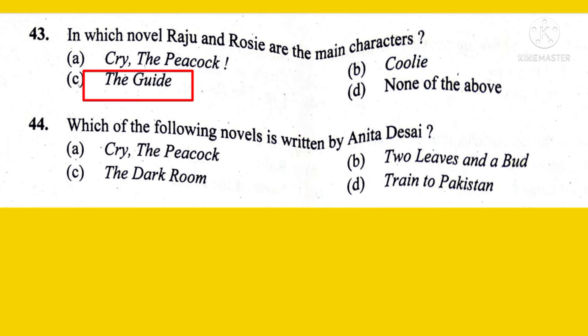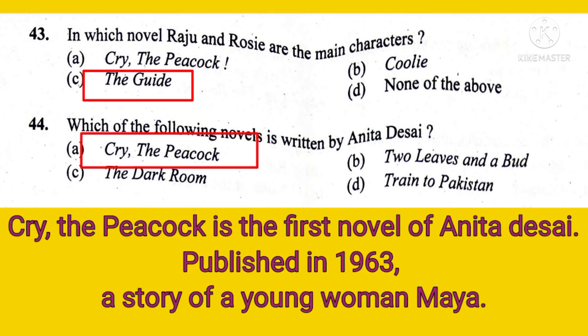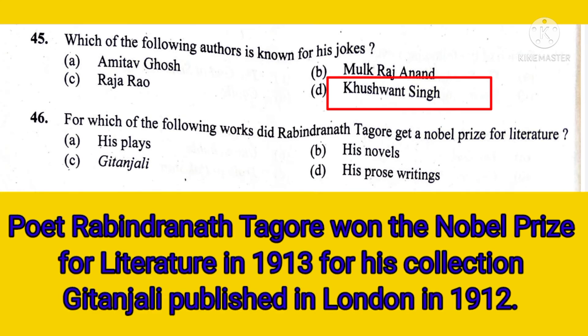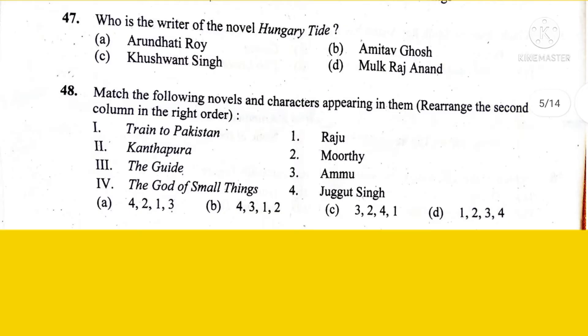Which of the following novels is written by Anita Desai? The right option is Cry the Peacock, Anita Desai's first novel, published in 1963 — a story of a young woman named Maya. Which of the following authors is known for his jokes? The right answer is Khushwant Singh. For which work did Rabindranath Tagore receive the Nobel Prize for Literature? The right answer is Gitanjali. Tagore won the Nobel Prize for Literature in 1913 for his collection Gitanjali. Who is the writer of the novel The Hungry Tide? The right option is Amitav Ghosh.